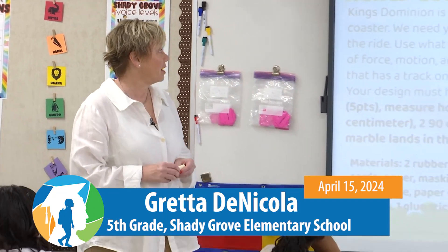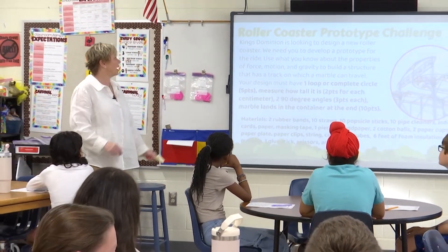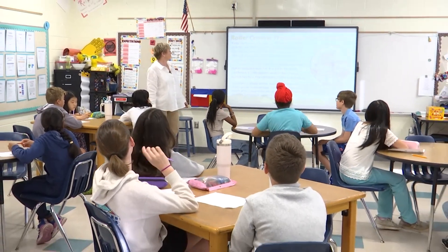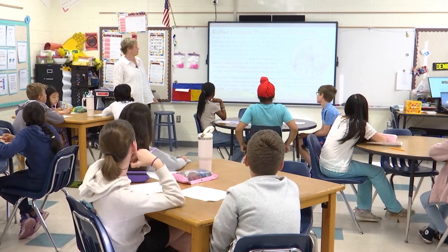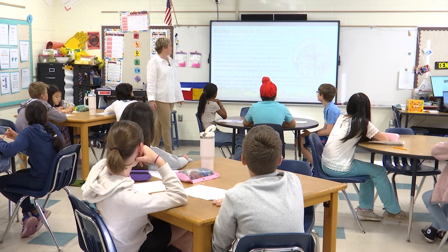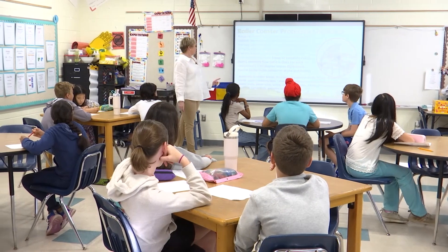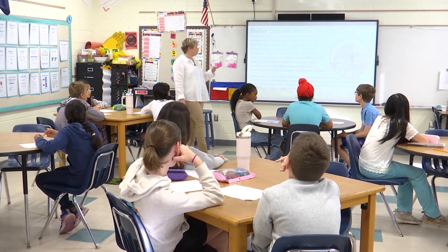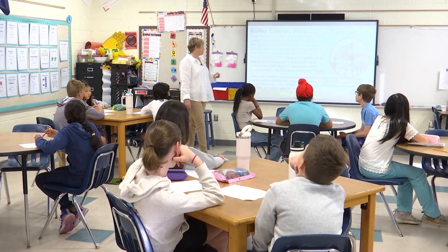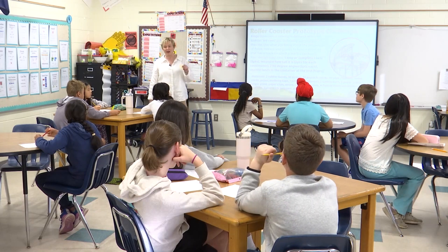Today, boys and girls, we're going to be creating a prototype of a roller coaster. King's Dominion is looking to design a new roller coaster, and we need you to develop a prototype for the ride. Use what you know about the properties of force, motion, and gravity to build a structure that has a track on which a marble can travel. Your design must have one loop or a complete circle — that's five points. Measure how tall it is in centimeters — two points each. Two 90-degree angles — three points — and the marble needs to land in the container at the end of the ride.